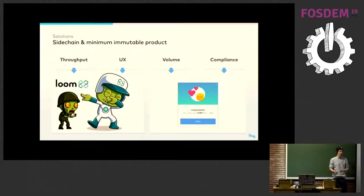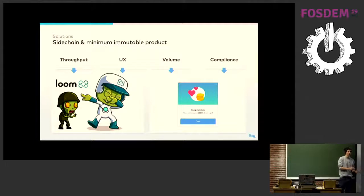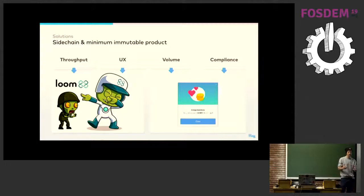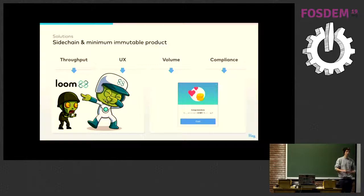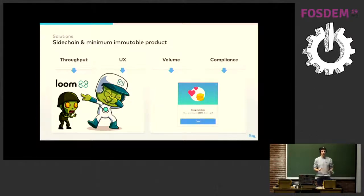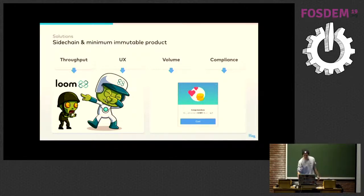We decided not to store any content from users on chain — no posts, no comments, no usernames. All we store are the interactions that occurred between users. For example, Alice gives one like to Bob, so Bob receives one karma token. This is stored on the blockchain, but nothing about the content. So storage requirements are way lower, and we also work around the compliance issue.